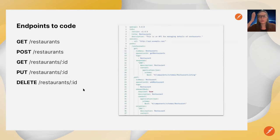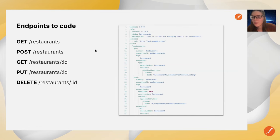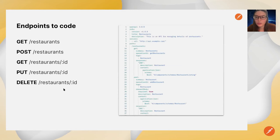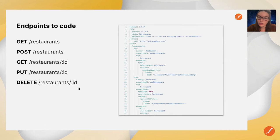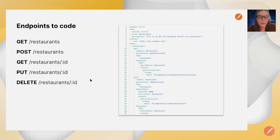So what are we doing? We have the restaurants API schema from yesterday that Kin helped us make. That API schema had five endpoints — our basic CRUD operations: getting all the restaurants, adding a restaurant, getting a specific restaurant, updating a restaurant, and deleting a restaurant. We are going to code all of these endpoints and show you what goes on behind the scenes in an API.